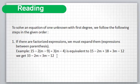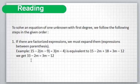In the second member, we get 3M minus 12, because 3 times minus 4 equals minus 12. Therefore, 15 plus 18 gives 33, and we get 33 minus 2M equal to 3M minus 12.